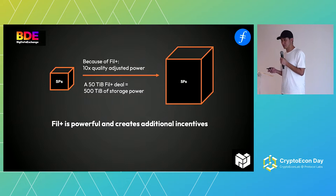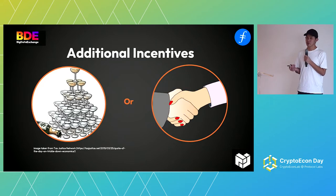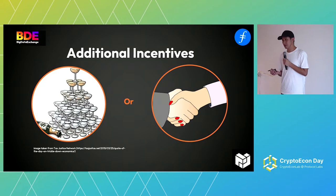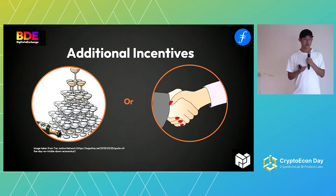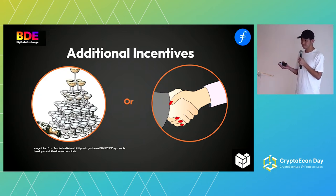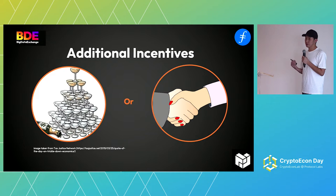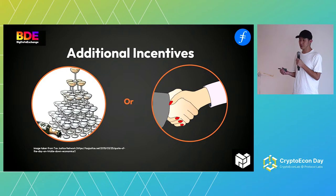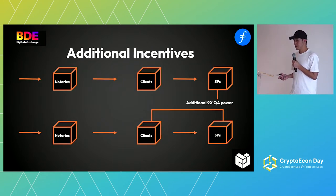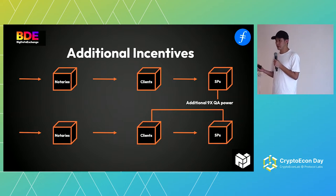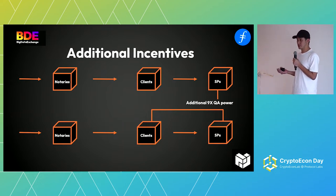This creates additional incentives. The real question is: how do we allocate these additional incentives? Do we use a trickle-down economics approach, or do we let the market decide? This is very contentious because every SP has different costs, different incentives, different structures. We think that free market theory is the best way to sort out these issues through price action and through demand and supply — let the market decide how to allocate this additional 9x of quality-adjusted power.